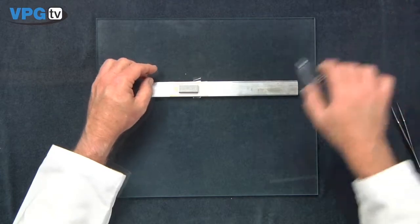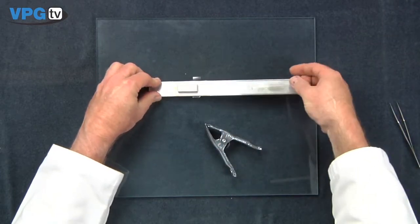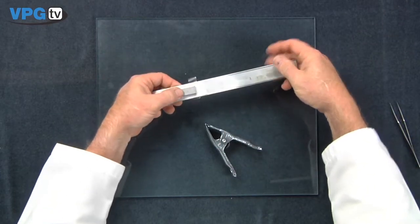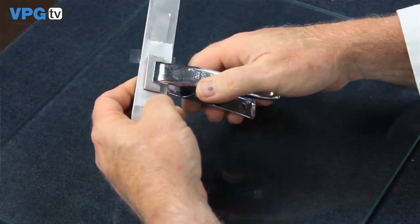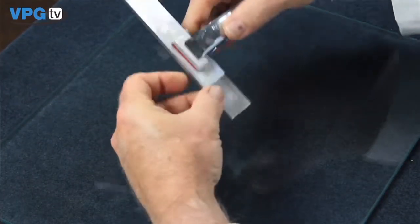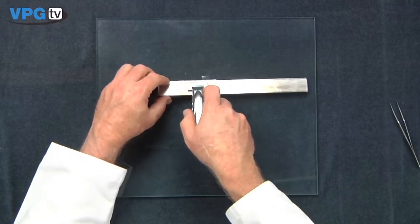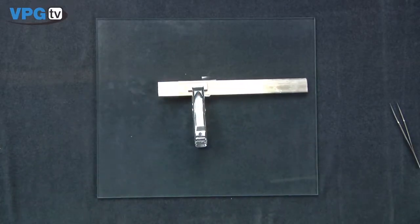Numerous devices are available to provide the required pressure. The one selected must contain a spring to assure constant force during the cure. On horizontal surfaces, a dead weight may be used. Before starting the cure, be certain the backup plate is parallel to the specimen surface.